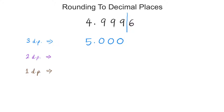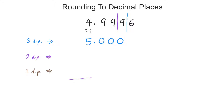Now, to two decimal places, again from the decimal point: one, two, so my line comes over here. What comes after the line? It's a 9, so I need to round up — raise the score. Imagine this as 499. The number that comes after 499 is 500, so this becomes 5.00.